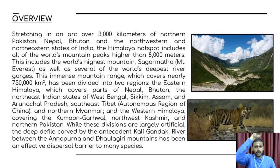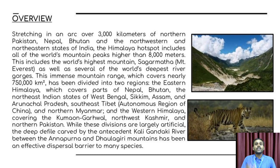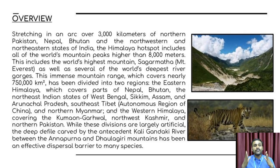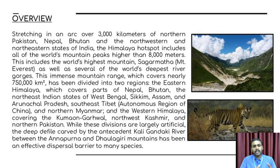The Himalayas stretch 3,000 km from northern Pakistan to Nepal, Bhutan, and the northwest and northeast. The range reaches 8,000 meters in height, including the world's highest mountain, Mount Everest (Sagarmatha), as well as several deep rivers. The range covers nearly 7,500,000 km² and has been divided into two regions: the Eastern Himalaya and the Western Himalaya.